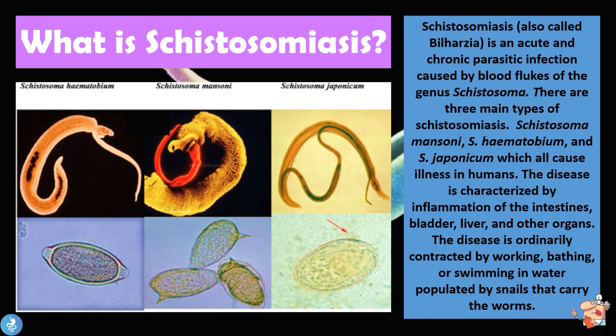So what is Schistosomiasis? Schistosomiasis, also called Bilharzia, is an acute and chronic parasitic infection caused by blood flukes of the genus Schistosoma. There are three main types: Schistosoma mansoni, Schistosoma hematobium, and Schistosoma japonicum, which all cause illness in humans. The disease is characterized by inflammation of the intestines, bladder, liver, and other organs.